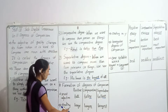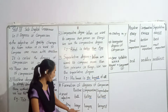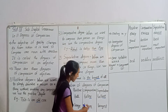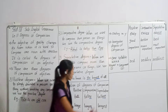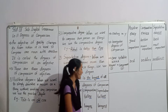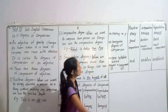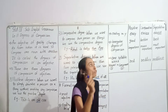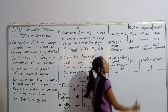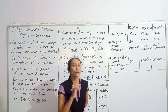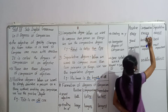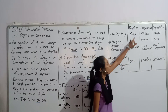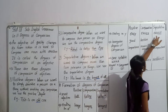Second rule: if the adjective ends in 'E', we add only '-r' for comparative and '-st' for superlative. Third rule: if the adjective ends in a consonant followed by 'Y', then Y is replaced by 'I' — in comparative degree we add '-er' (easier), and in superlative degree we add '-est' (easiest).